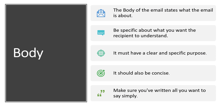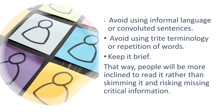The next part is the body. The body of the email states what the email is about. Be specific about what you want the recipient to understand — it must have a clear and specific purpose. It should also be concise. Make sure you have written all you want to say simply. Avoid using informal language, trite terminology, or repetition of words. Keep it brief, so people will be more inclined to read it rather than skimming it and risking missing critical information.